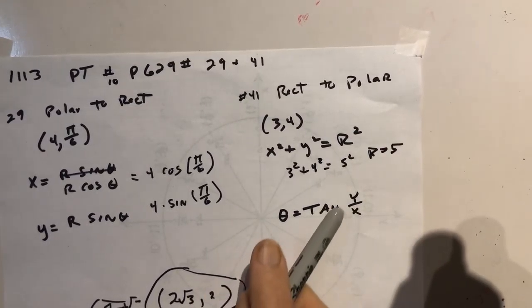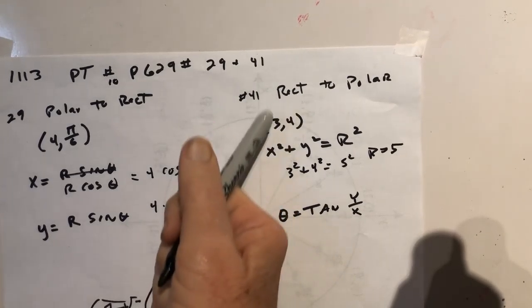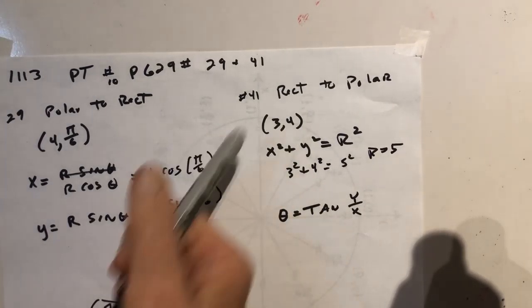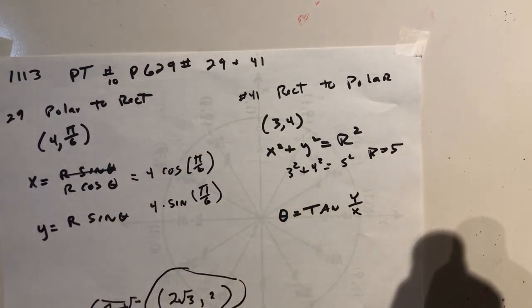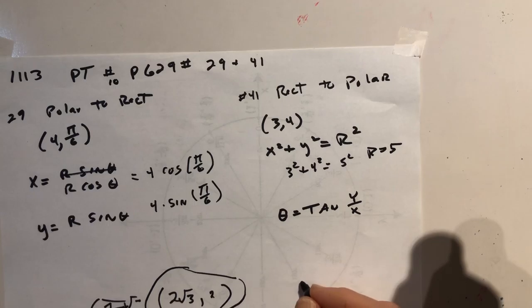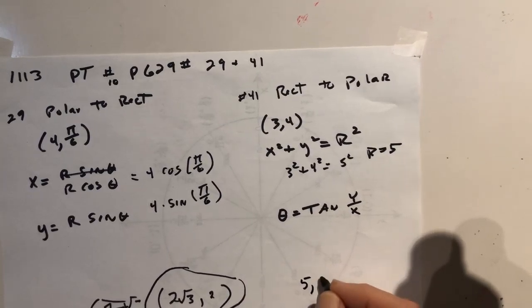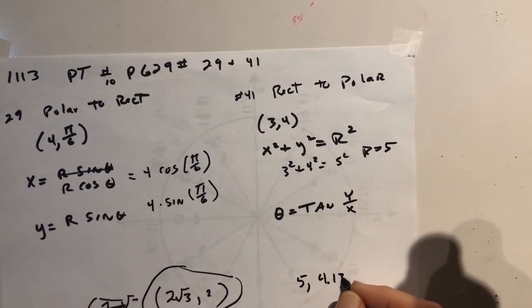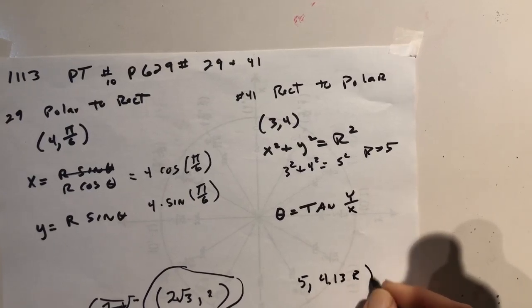So r is five. And to get theta, it's just tangent of y over x. So I hit tangent, four over three. And it doesn't come out nice. I think it was four point one three. So your answer for this one is five, four point one three. That's measured in radians.